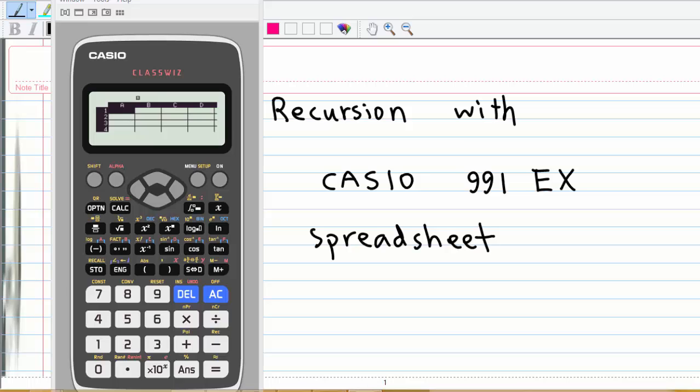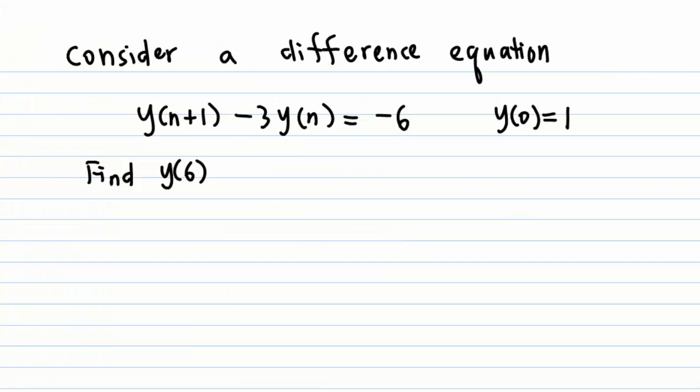This is a video to demonstrate how to do recursion with Casio 991EX spreadsheet. Consider a difference equation y(n+1) - 3y(n) = -6, where y(0) = 1. Find y(6).